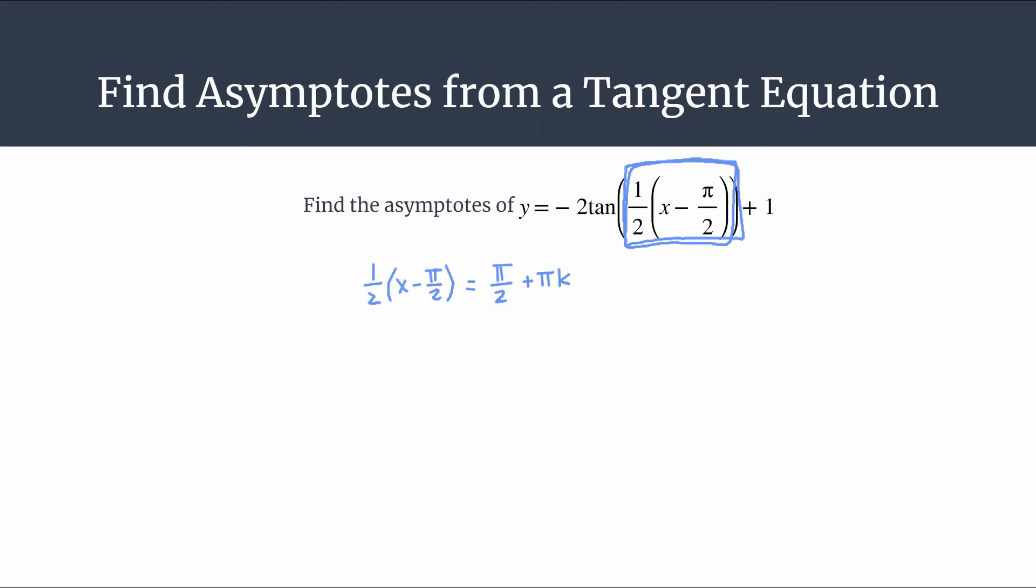Okay, I'd prefer to just say multiply everything by 2, and then multiply this whole thing by 2. Alright, so on the left side we have 2 times 1 half, so that cancels out and we're left with x minus pi over 2. And then on the right side we have pi over 2 times 2, so pi, and then we have pi k times 2, so that's plus 2 pi k.